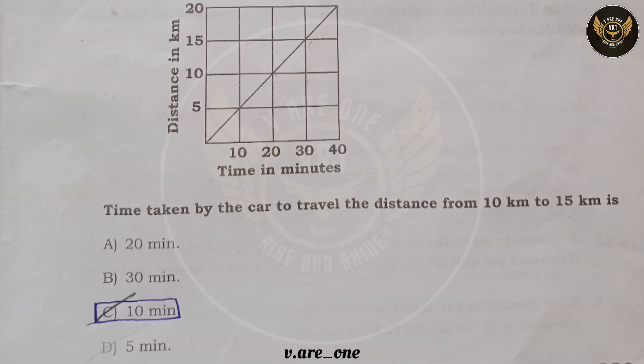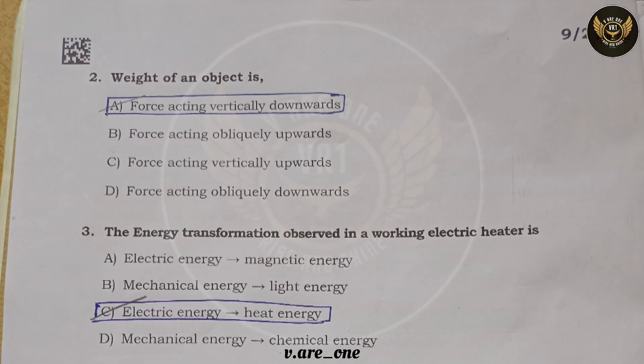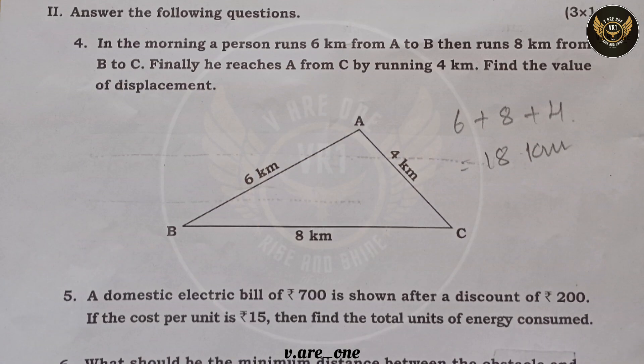Question two: the weight of an object is — answer is option A — force acting vertically downwards. Question three: the energy transformation observed in a working electric heater is option C — electric energy to heat energy.